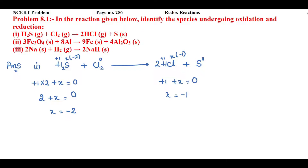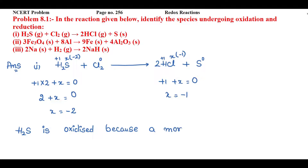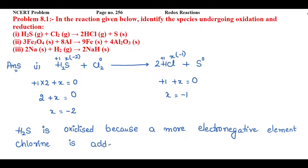In H₂S, sulfur has a -2 oxidation state, but on the product side it is having zero oxidation state. So H₂S is oxidized. H₂S is oxidized because removal of hydrogen is happening on the product side — a more electronegative element, chlorine, is added to hydrogen on the product side.